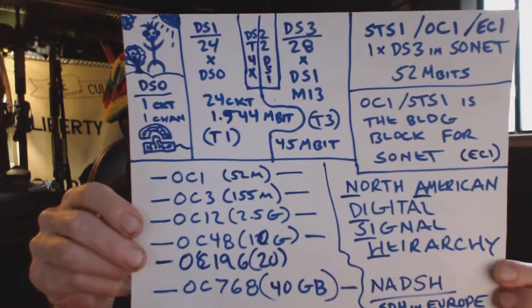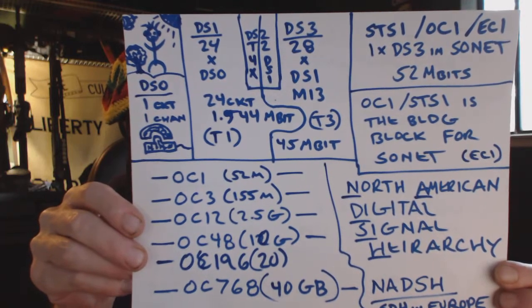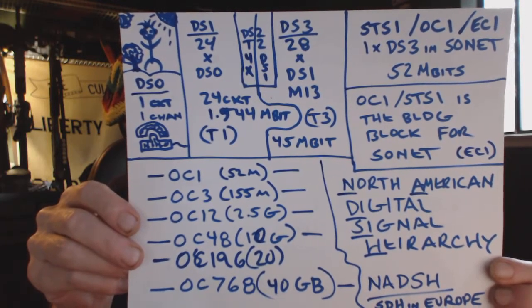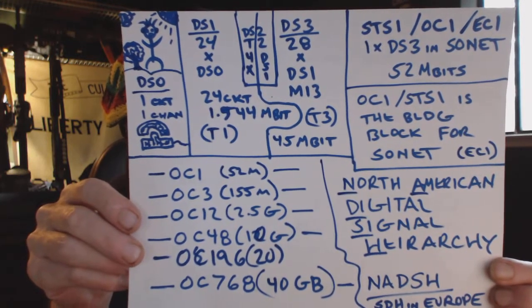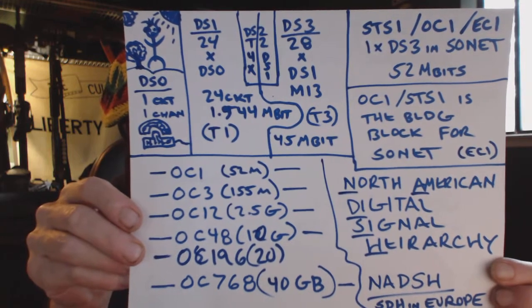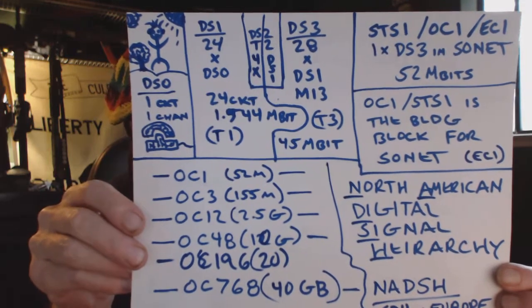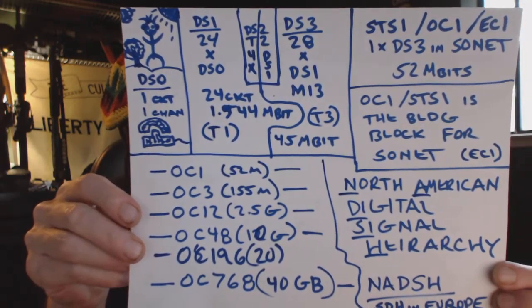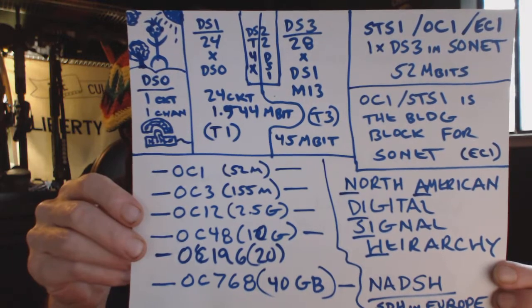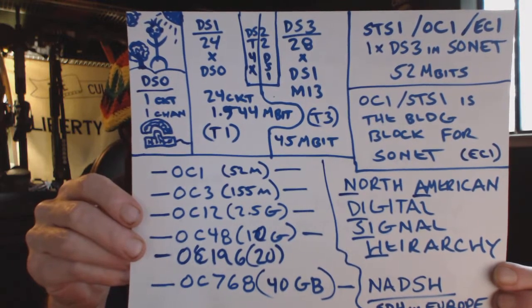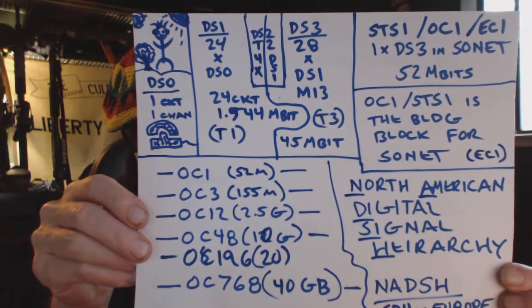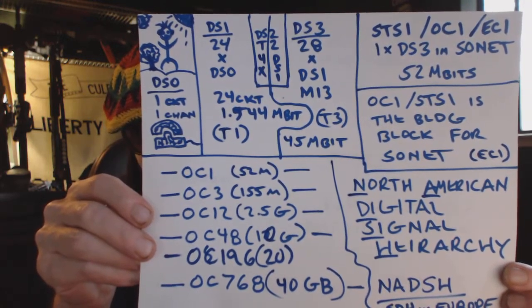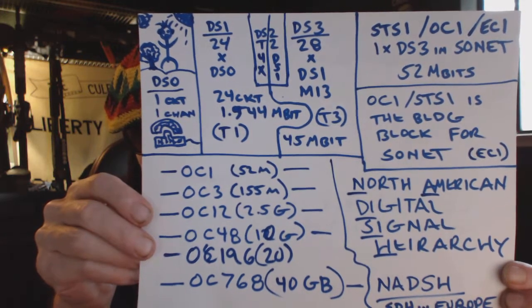So we start with one DS0, which is 64 kilobits — that's one channel allocation, a digital signal level zero. Then we go to a DS1: digital signal level one, or 1.544 megabits, or 24 by DS0.